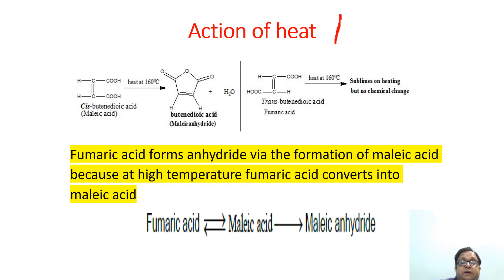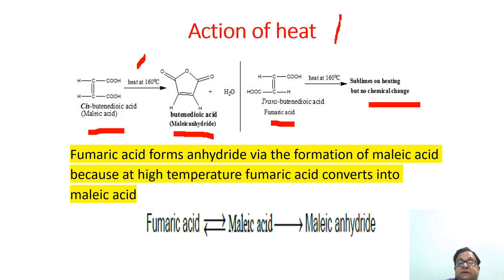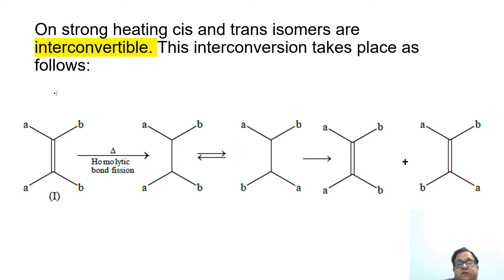The next method is the action of heat. If we heat cis-butenedioic acid (maleic acid) at 160°C, it is easily converted into maleic anhydride. On the other hand, trans-butenedioic acid (fumaric acid) sublimes on heating at 160°C but shows no chemical change. Fumaric acid forms an anhydride only via the formation of maleic acid, because at high temperature fumaric acid converts into maleic acid. On heating, cis and trans isomers are interconvertible.